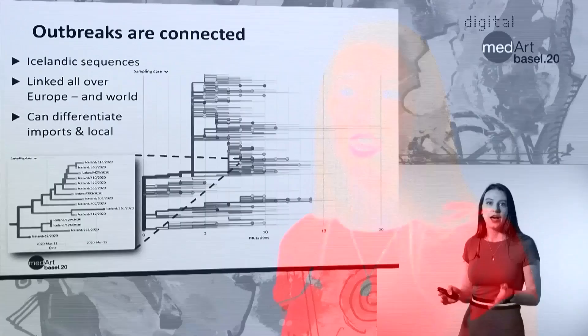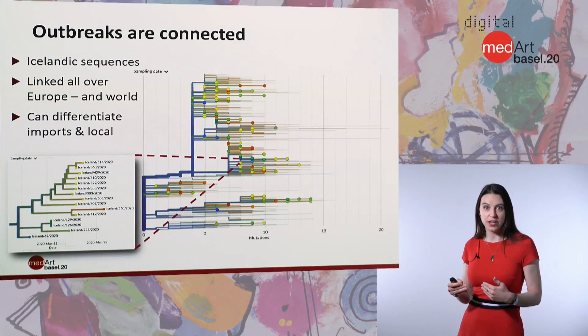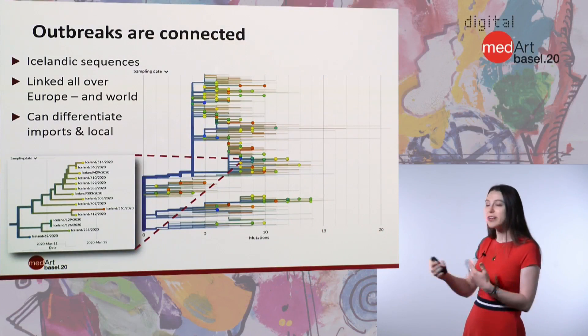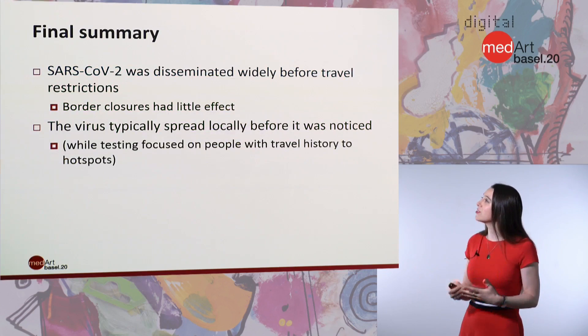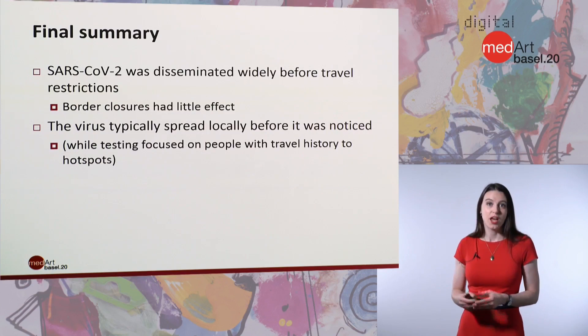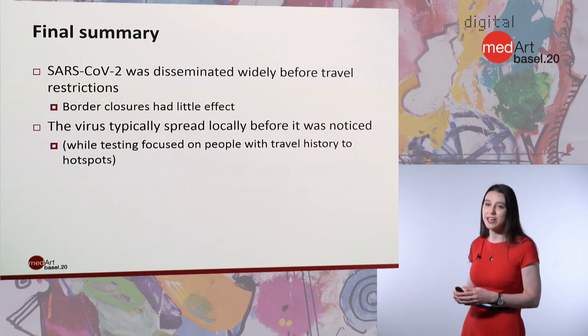Identifying this difference between imported strains and local transmission is really vital for healthcare, because we need to know what different strategies to use to contain the virus depending on which type of transmission is happening. SARS-CoV-2 was disseminated widely before travel restrictions. We can see that the virus traveled multiple times between different countries, so border closures really had little effect.